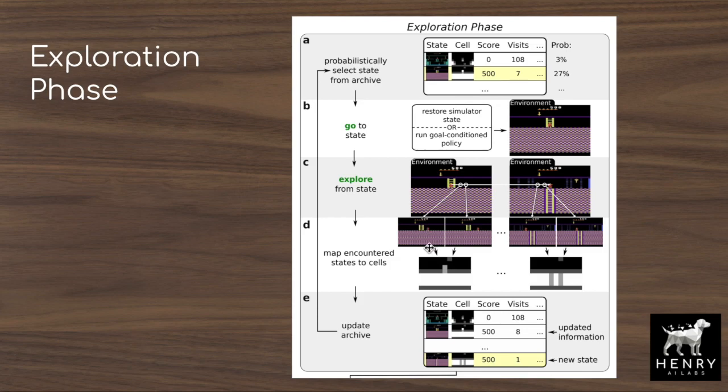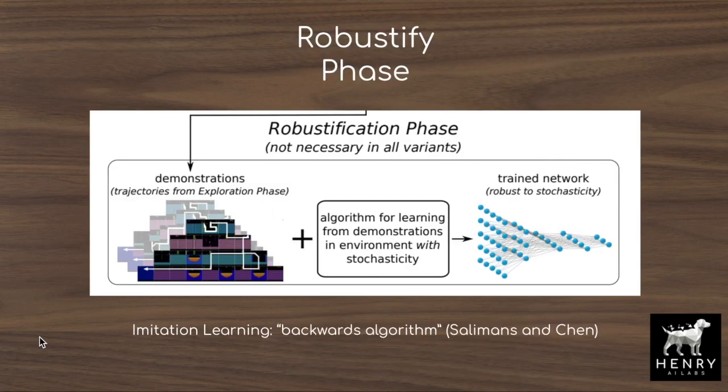Once the exploration phase finds a reward in a sparse reward environment — like the robotic pick-and-place task — or maximizes reward in a denser environment like Atari, phase one of GoExplore ends. Then we enter phase two, the robustification phase, where trajectories of state-action sequences from exploration are distilled into the policy network using imitation learning, supervised learning, or goal-conditioned policies.